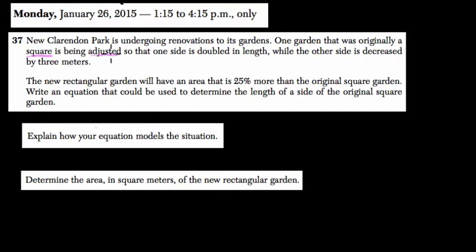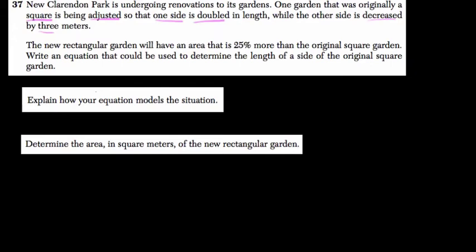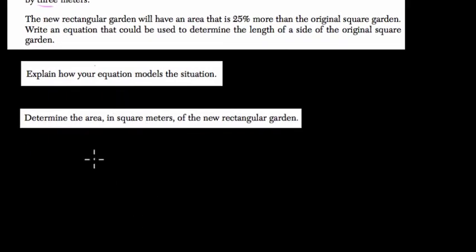So they're going to change the size of it. So that one side is double in length while the other side is decreased by 3 meters. So doubling and then we're decreasing one of the sides by 3 meters. Let's just sketch that out to make sense of the problem so far.